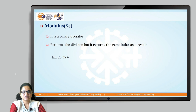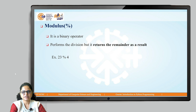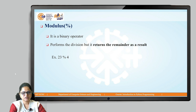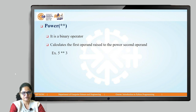The next operator is the modulus operator, represented by the percent sign. It is a binary operator which also performs division, but it returns the remainder as a result. Instead of giving the quotient, it returns the remainder. Division operators return you the quotient part, but the modulus operator returns you the remainder of the division.